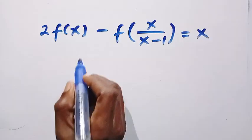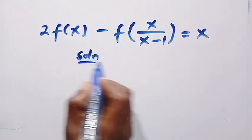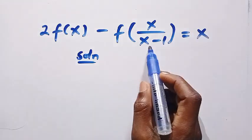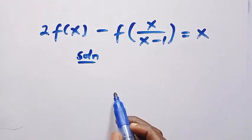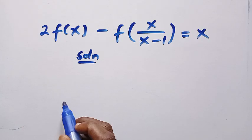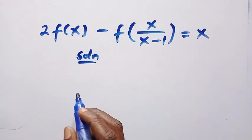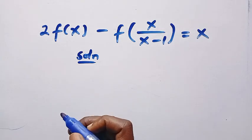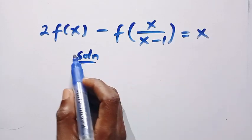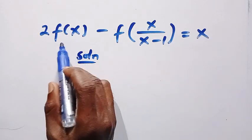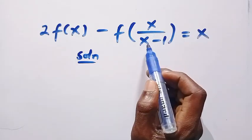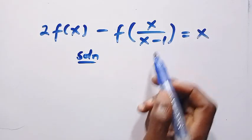For the first one, if I consider the solution, we have 2f of x minus f of x divided by x minus 1 equals x. I will be applying the substitution method here, and likely for the second one as well. What are we going to substitute? Since we are looking for f of x, we are going to substitute for x over x minus 1, replacing it with another letter.